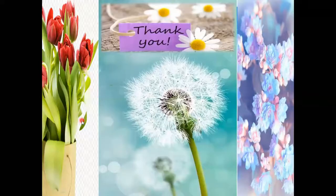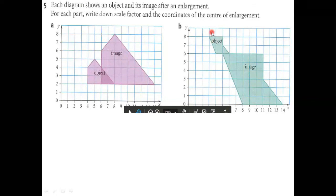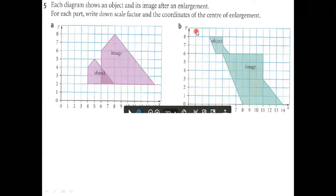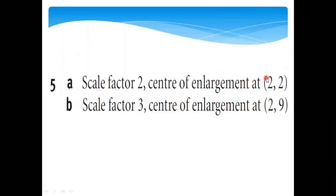Let's check the answer. From top to bottom it covers two boxes, but from here to here it covers six boxes. Two multiplied by three equals six, so the scale factor is three. To find the center of enlargement, we check how far each point is from the center. This point is at (2, 9). From there, counting two boxes to the small shape and six boxes to the large shape confirms the center of enlargement is at (2, 9). So that is the answer to Question 5.